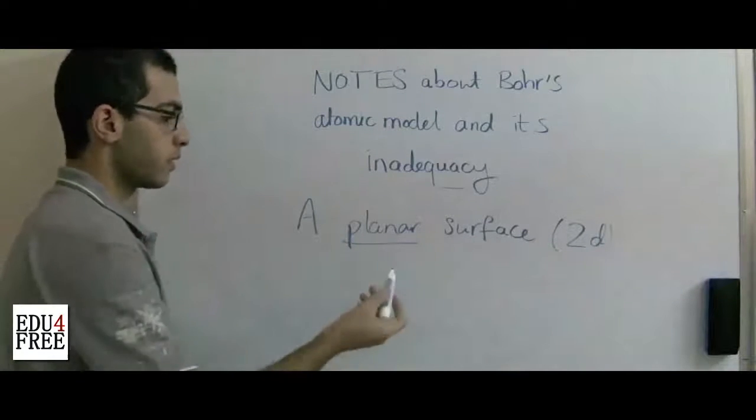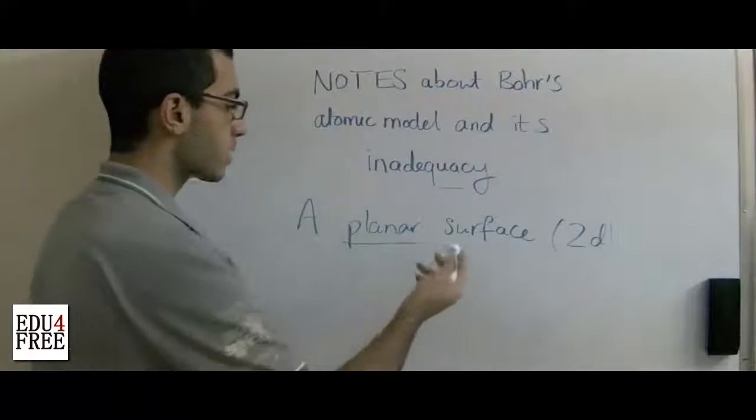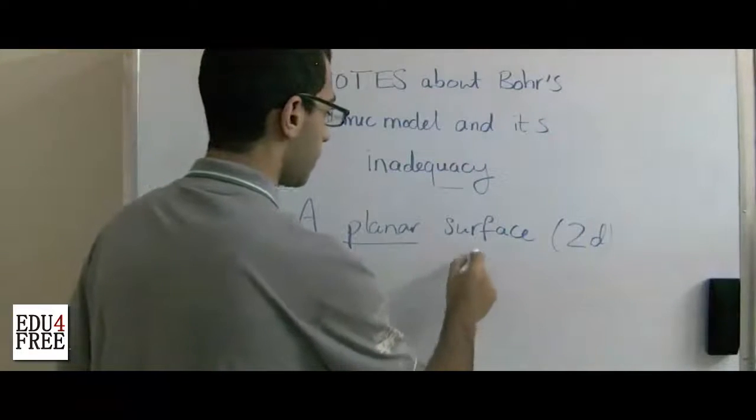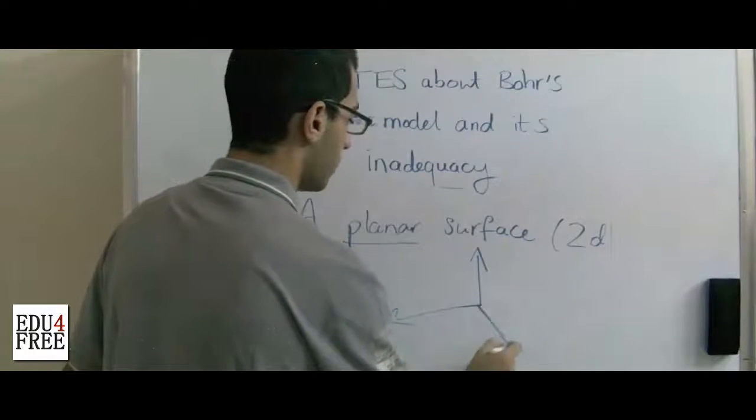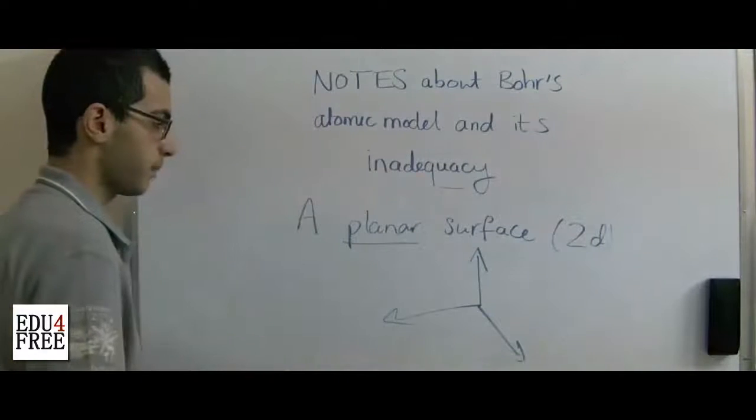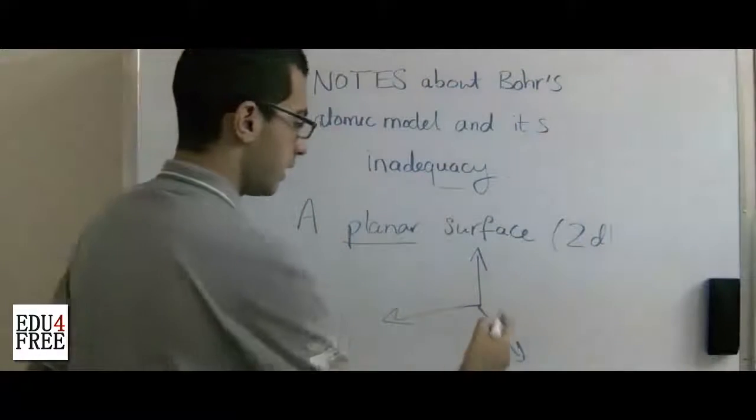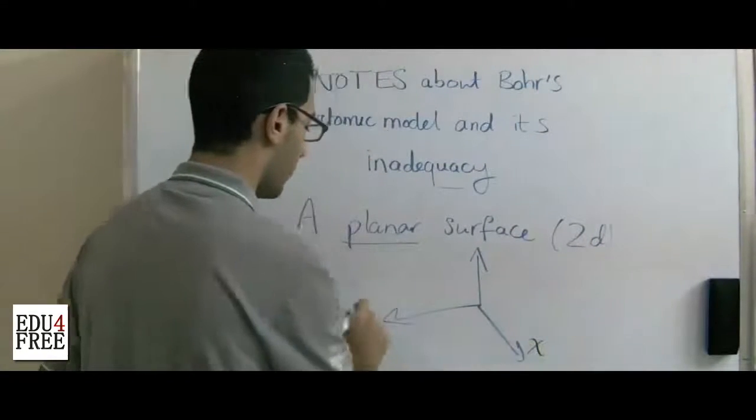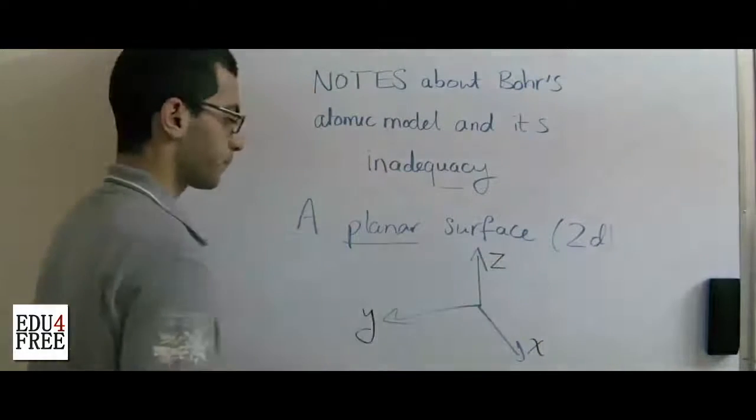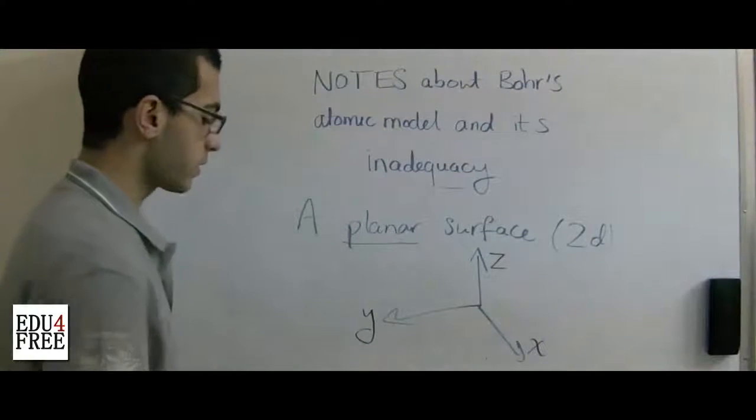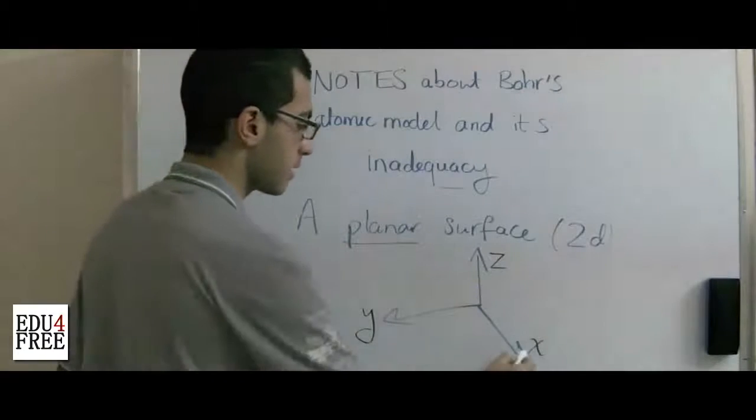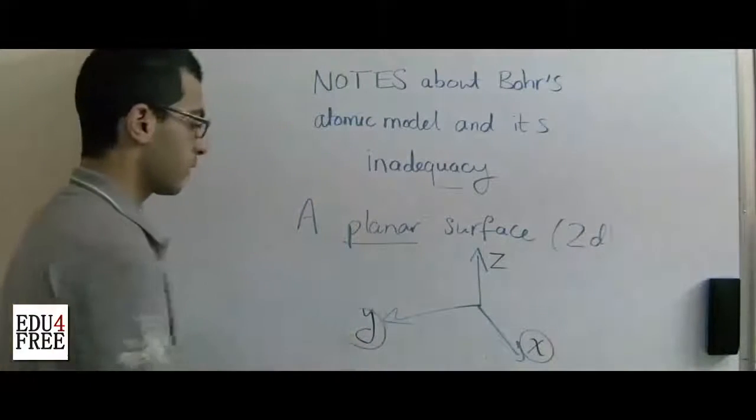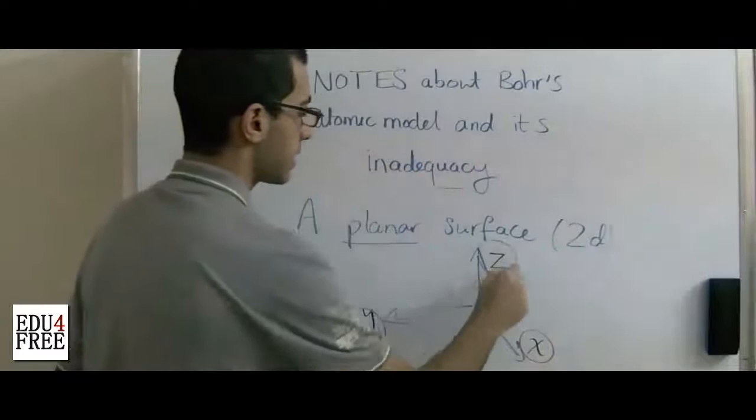He didn't put his assumption that there is a Z axis. So we said that the hydrogen was a planar surface while actually it's a three-dimensional atom. So there is the X axis, the Y axis, and the Z axis. The planar surface only contains the X axis and the Y axis, while the three-dimensional has the Z axis.